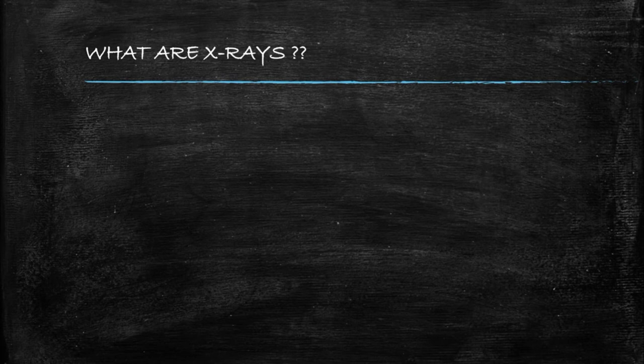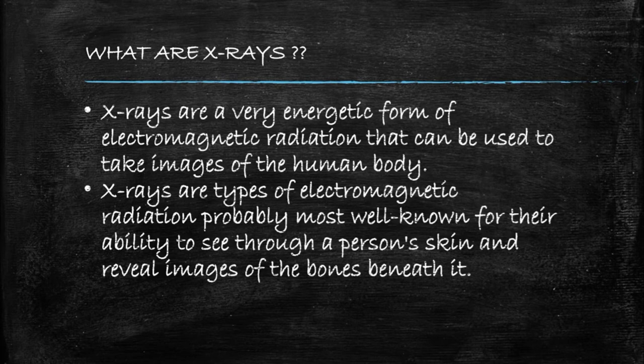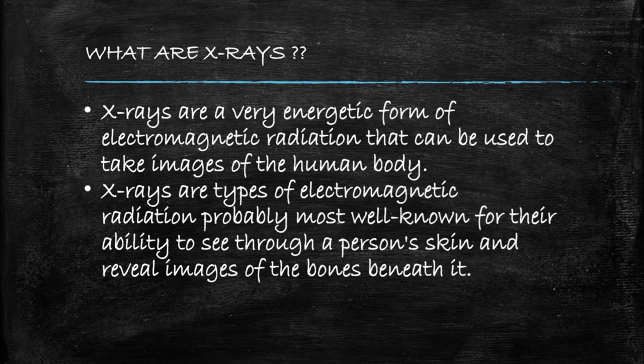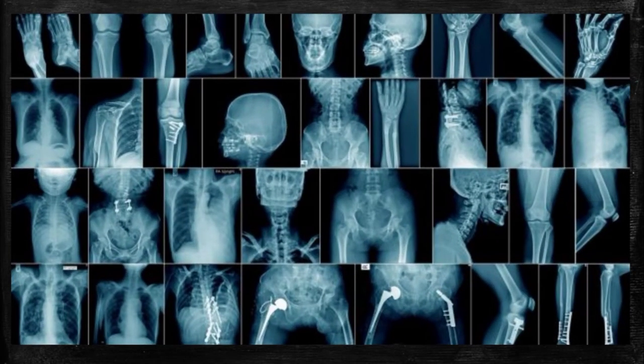Over the years, these exceptional properties have made x-rays useful in many fields such as medicine and research into the nature of atoms. X-rays are a very energetic form of electromagnetic radiation that can be used to take images of the human body. They are probably most well-known for their ability to see through a person's skin and reveal images of the bones beneath it. Their spectrum range is between 30 petahertz to 30 exahertz, that is 3×10^16 Hz to 3×10^19 Hz. One of the uses of x-rays is to find any damage in human bones as shown in the picture.